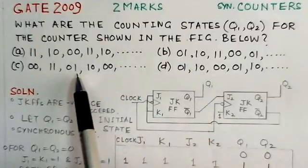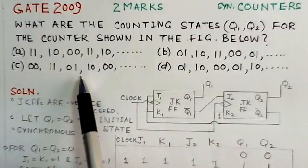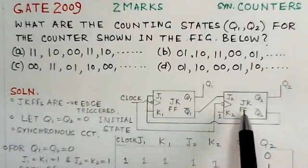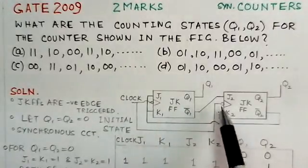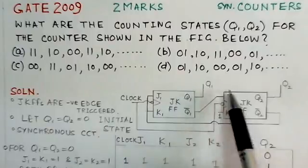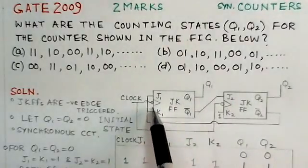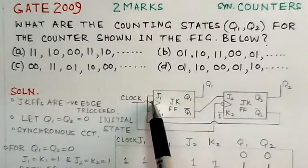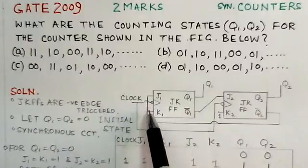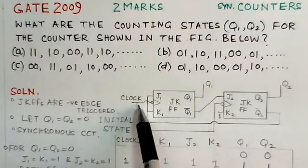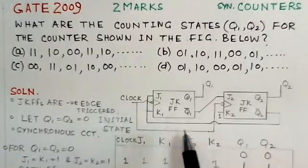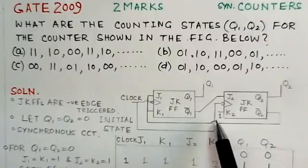We have to find out the corresponding counting sequence in this counter. The circuit consists of two JK flip-flops with outputs Q1 and Q2. These flip-flops are negative edge triggered — indicated by the triangle and small circle on both flip-flops. The clock is applied synchronously, meaning the same clock is applied to both flip-flop inputs.